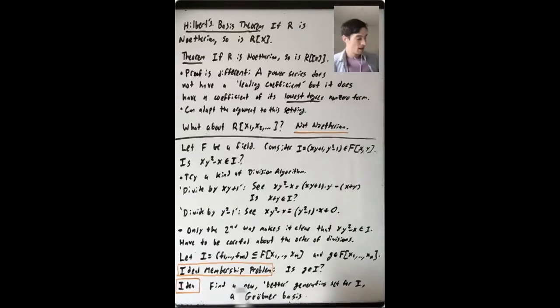So how do you solve this problem? What's the idea? What a big idea is to say, okay, I is the ideal generated by F1 up through FM, but that's just one generating set for this ideal. There are many, many generating sets. And we can find a new,